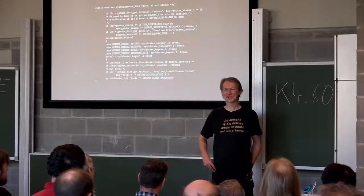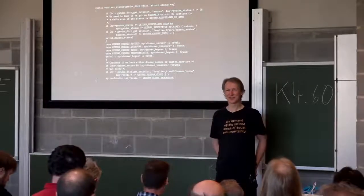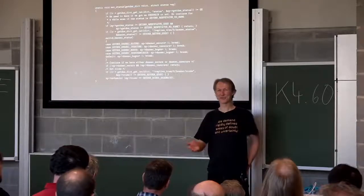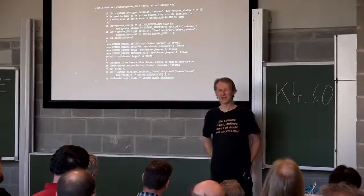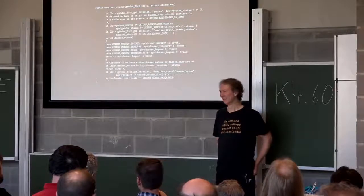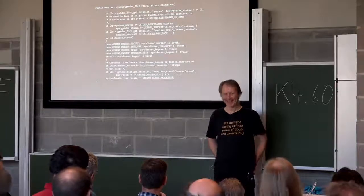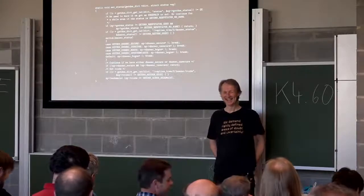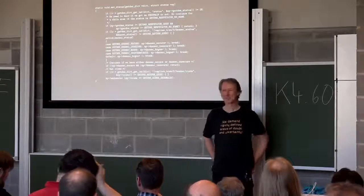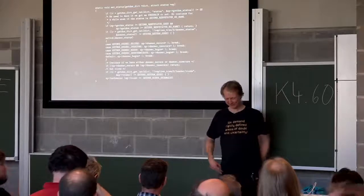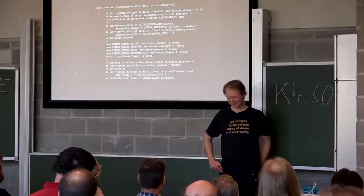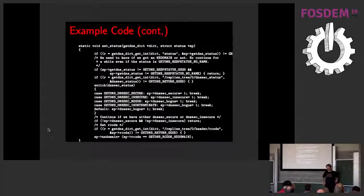Follow-up question: why are there two fields — 'dns_secure' and 'dns_insecure'? Reiterated: it's because there's a third state — bogus — where validation failed. Question: what happens if both flags are true? Answer: that shouldn't happen, and looking at the code, assuming all variables are properly initialized to zero, there should be no code path that sets both simultaneously.